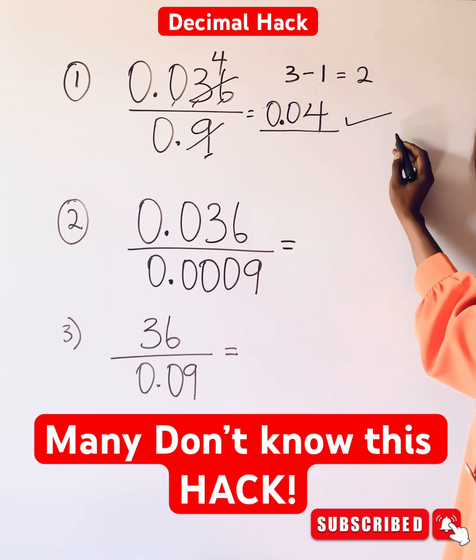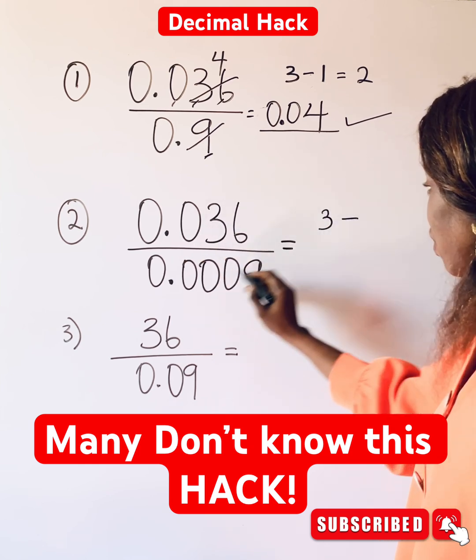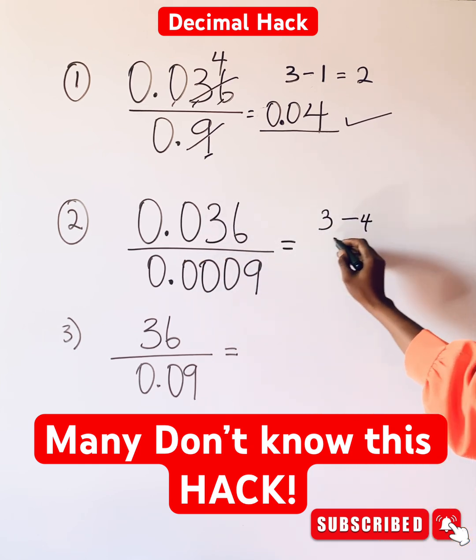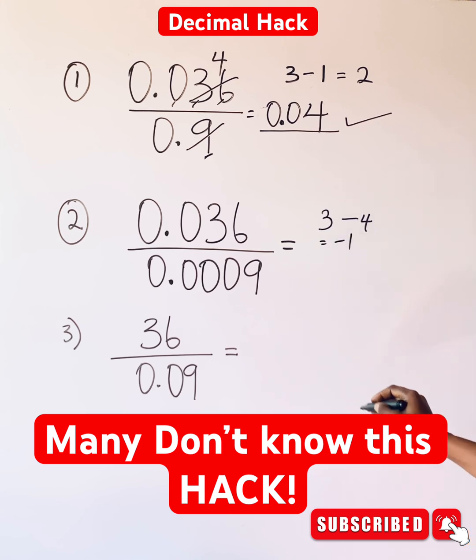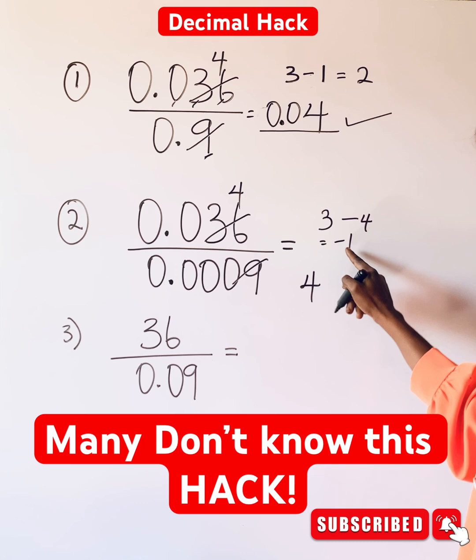For this, we have three here minus this is four, and when you subtract it gives you negative one. So do your normal division, this is four. Because it's negative, it means one will come after this number.